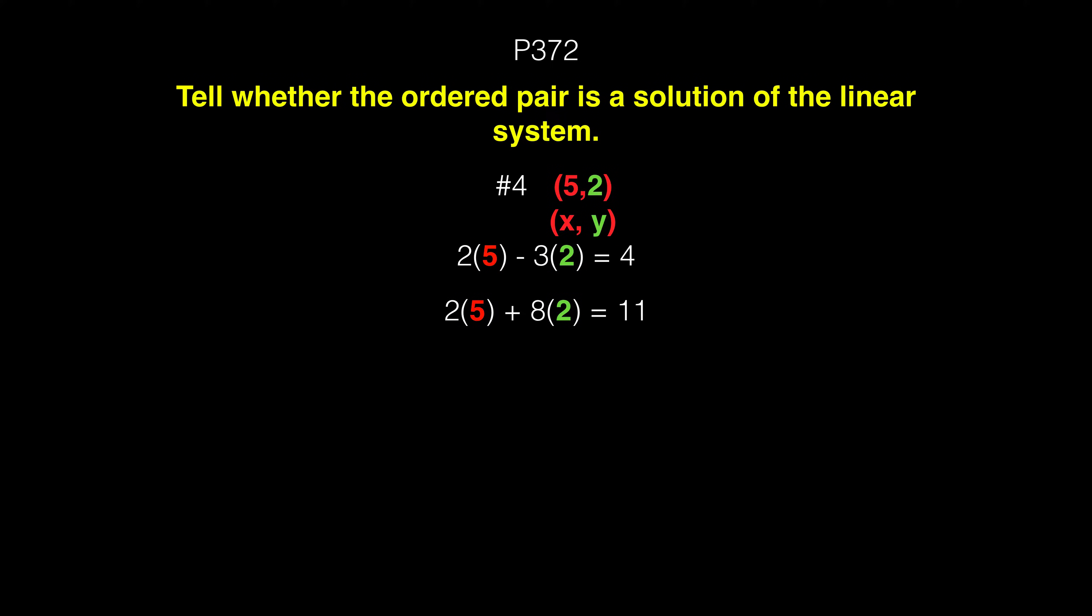On the top, you'll see I have 2 times 5 minus 3 times 2, so that's going to be 10 minus 6, and that in fact is 4. So this equation is true. The coordinate point (5, 2) does hold true for the top equation.